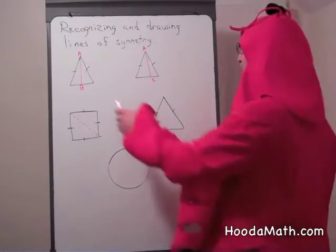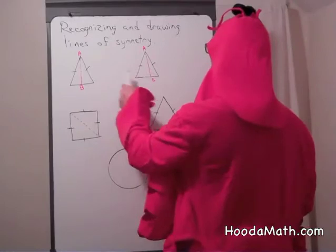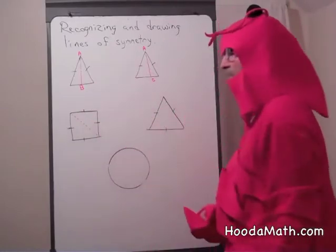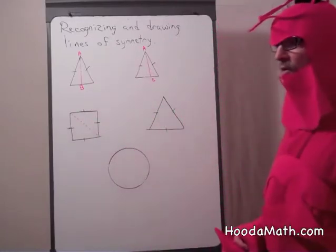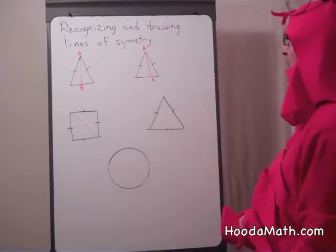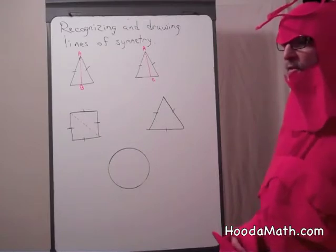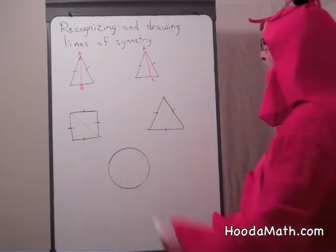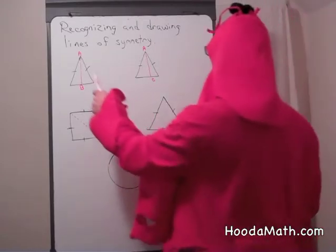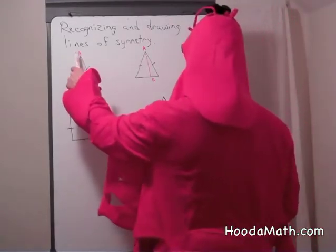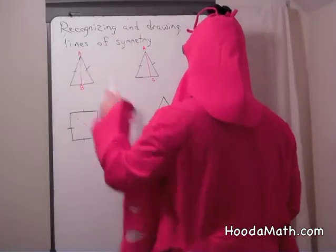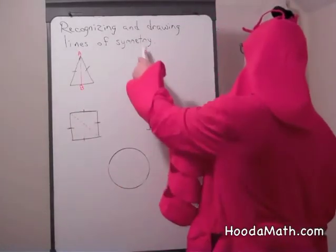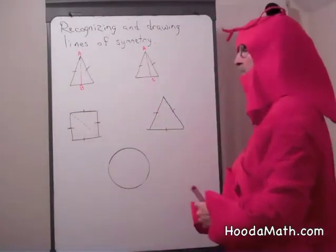Let's look at these two figures. These are both isosceles triangles. Which one has a line of symmetry? Is the one in figure 1, AB, is that a line of symmetry? Or is AC a line of symmetry?